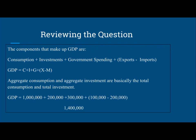Now, the components that make up GDP are consumption, investments, government spending, and net exports. Net exports are exports minus imports. GDP equals C plus I plus G plus (X minus M).